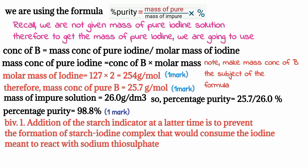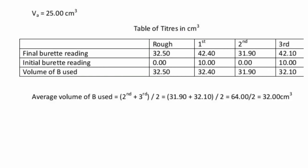For the last question — why starch indicator is not added at the beginning of the titration: starch should not be added at the beginning because it would lead to complex ion formation, and also in order to obtain accurate results. Adding starch too early causes a complex ion to form with iodine that interferes with the endpoint.